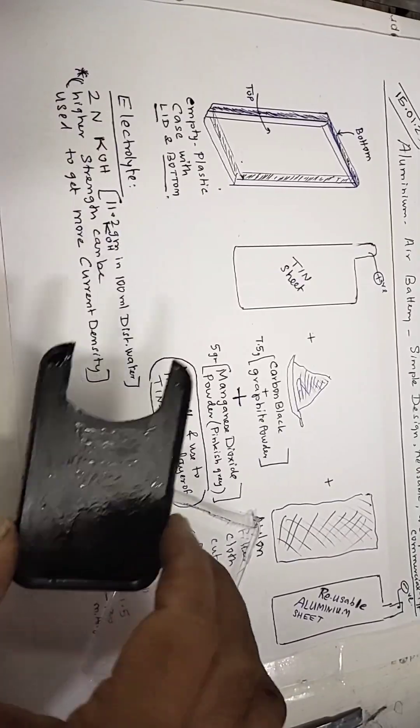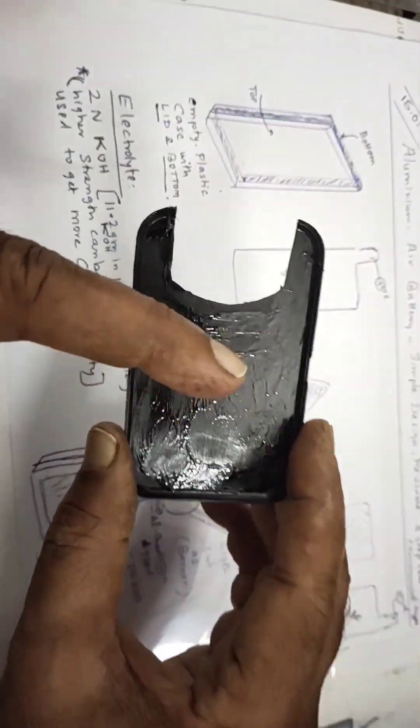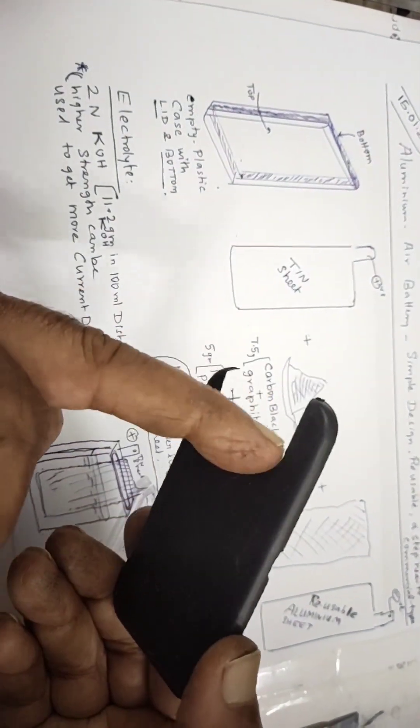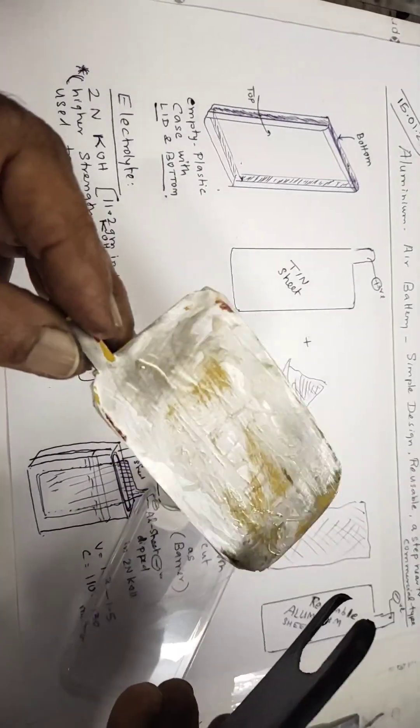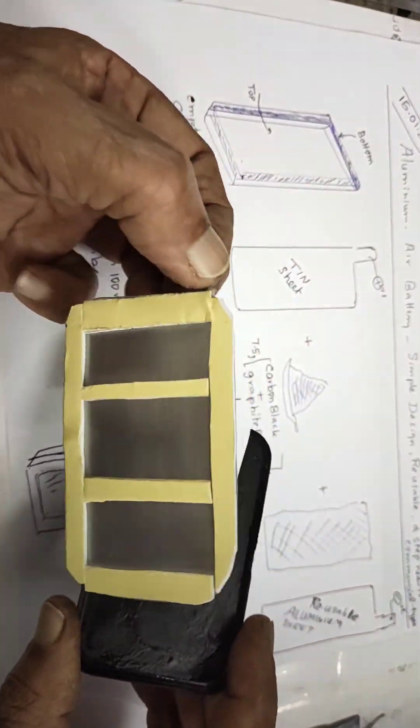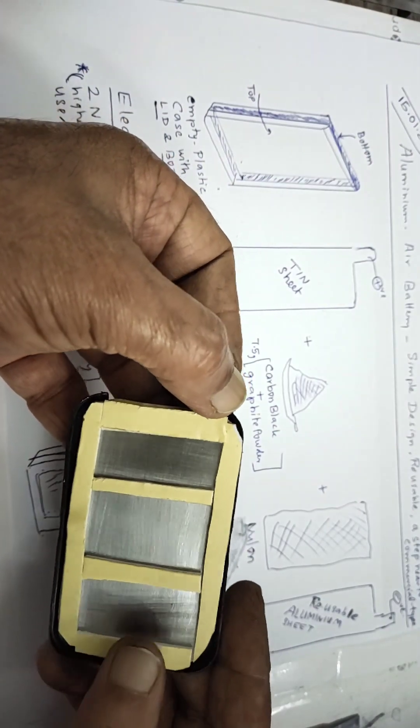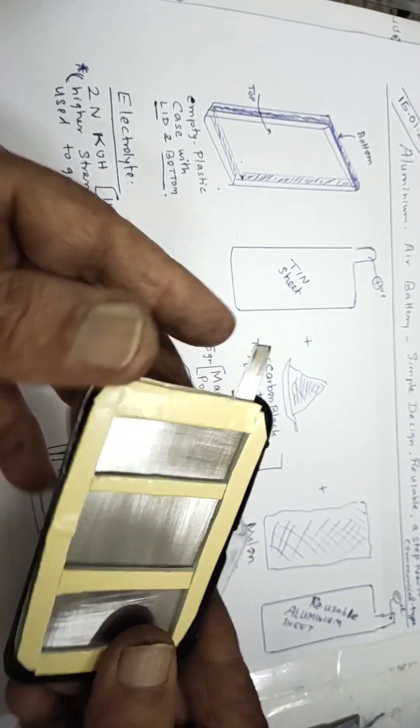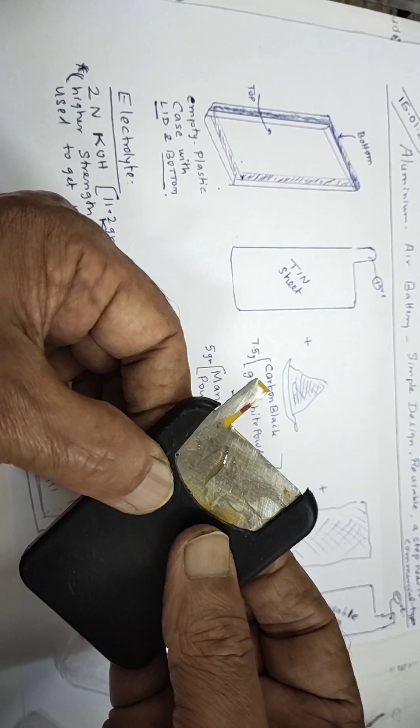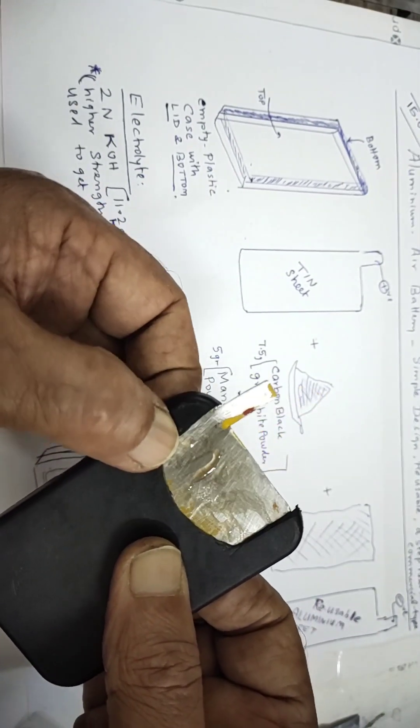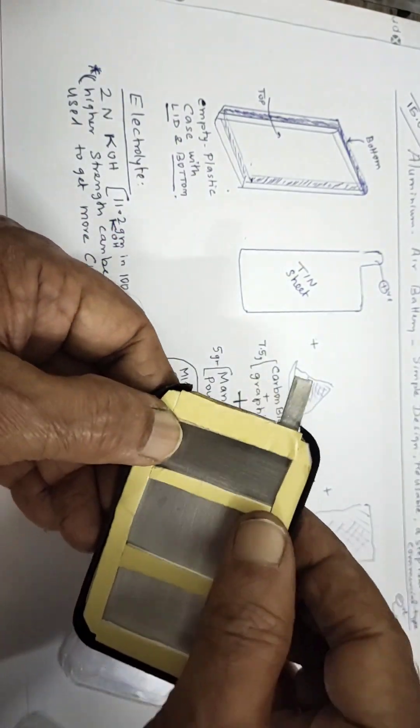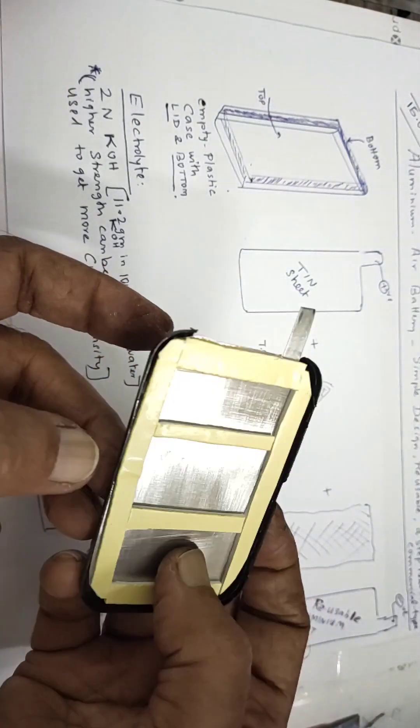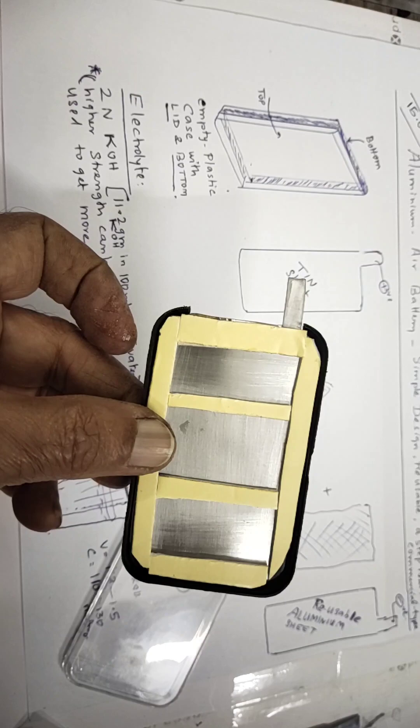At the bottom I have put adhesive and spread it. This is the bottom container. I have put this tin sheet, similar in shape. I measured and have done like this. I am going to fix it here. This will be our first step towards making this battery. See that it is fixed properly. This will be our positive plate preparation.